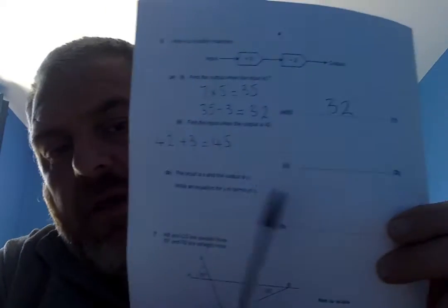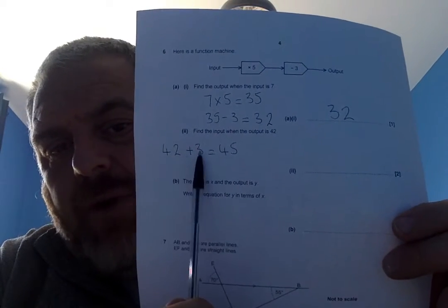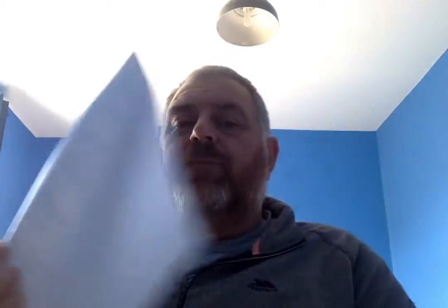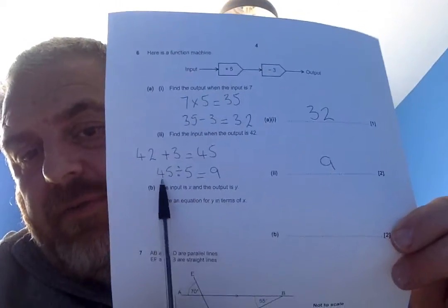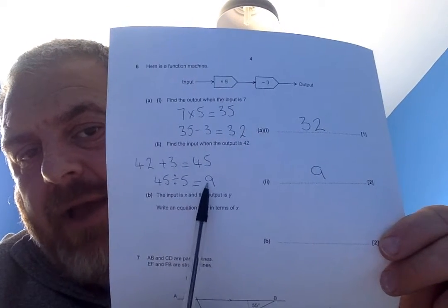in the machine it was a minus 3. So, the opposite of a minus 3 is an add 3. So, my first stage is to do this. 42 add 3 gives me 45. The first part of the machine is a multiply by 5. So, the opposite of the multiply by 5 is divide by 5. Which gives me 45 divided by 5, which gives me the number 9.